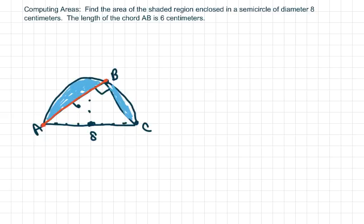What we're going to do is find the area of the semicircle first, then find the area of the triangle, and then subtract. So the area of a circle is πr², so the area of a semicircle is one half of that.